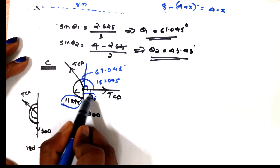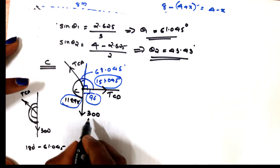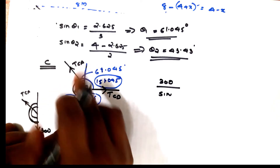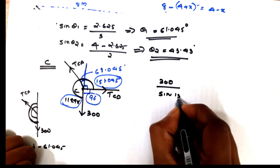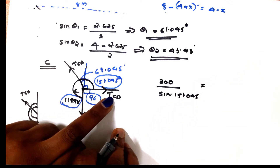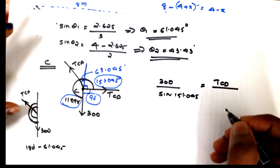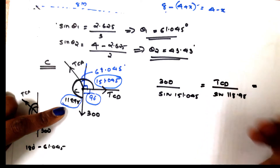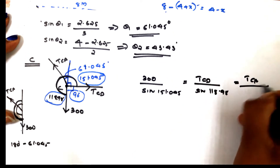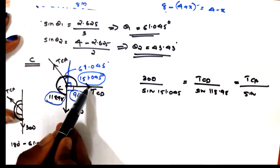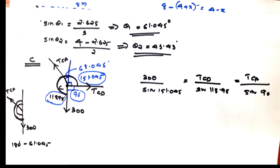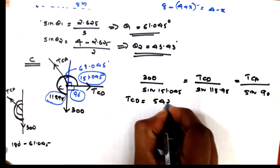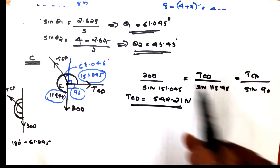Applying Lamy's theorem at joint C: 300 divided by sin(151.045°) equals TCD divided by sin(its opposite angle) equals TCA divided by sin(90°). Solving these equations, TCD is calculated to be 542.21 N.